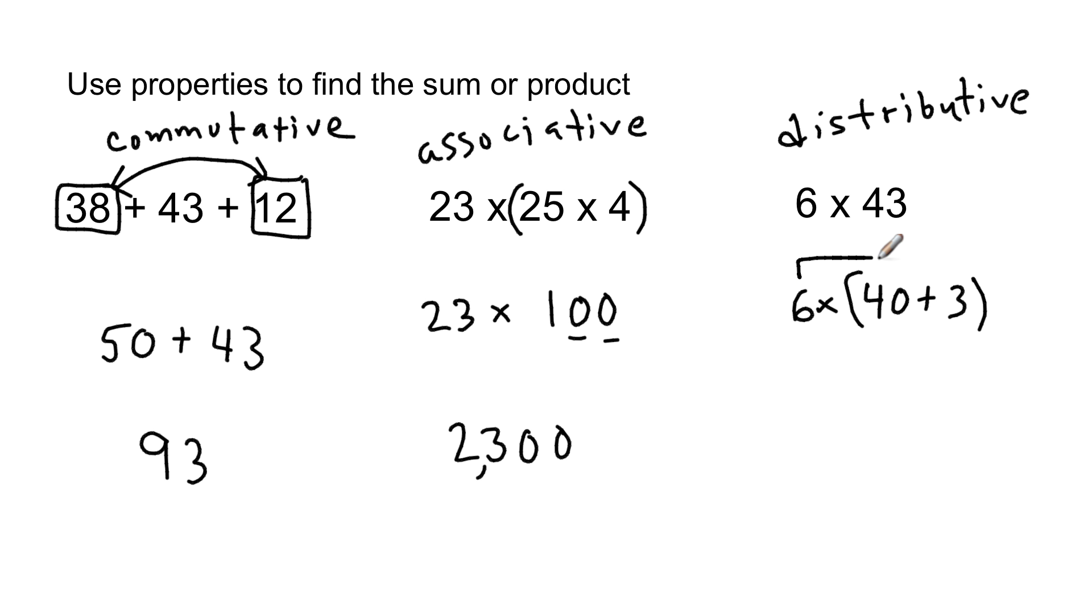And I can do these things in my head. So the 6 times the 3 is an 18. And the 6 times 40 is 24 with a 0 on it and 240. And I can combine those into 240 plus 18, which is 258. That is the distributive property where you take one of the numbers, you distribute them out into two parts, and then multiply both those parts by the other number.